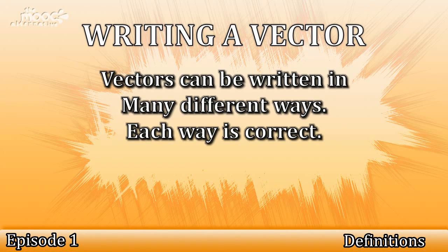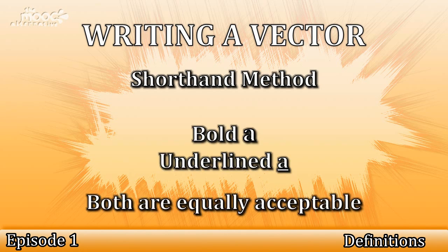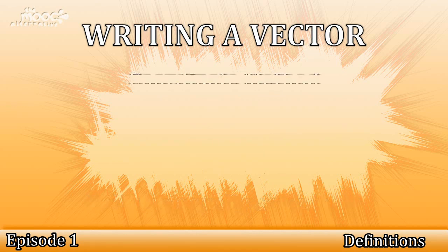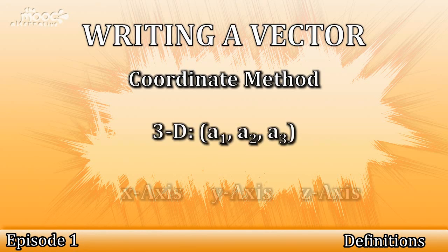Vectors can be written in many different ways, each of which is correct. We have a shorthand way of writing vectors: bold a or underlined a. Both are acceptable. There is also a coordinate way, which you should be familiar with in two dimensions. It is normally written like this: a1, a2, a3.